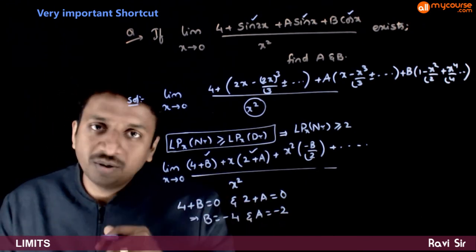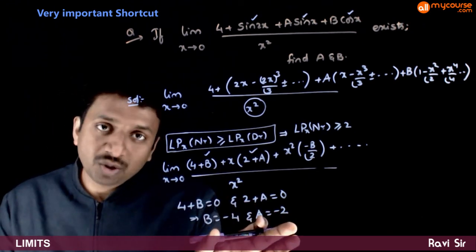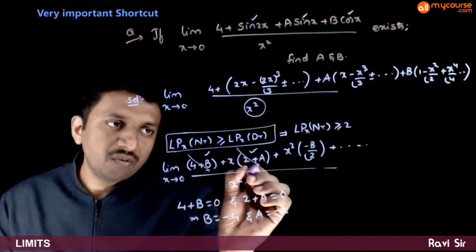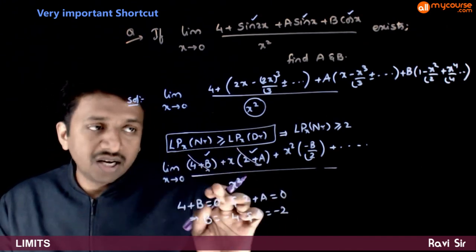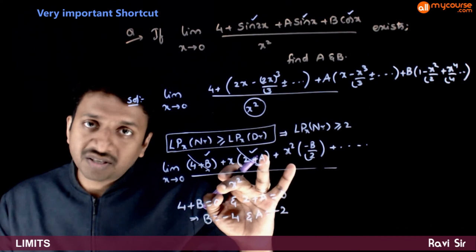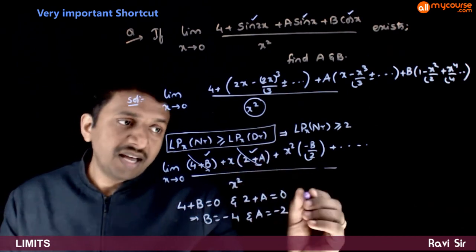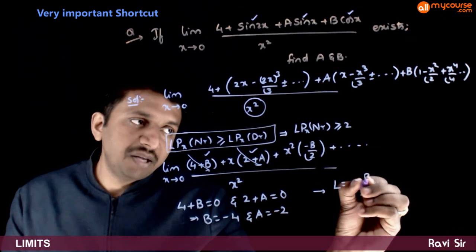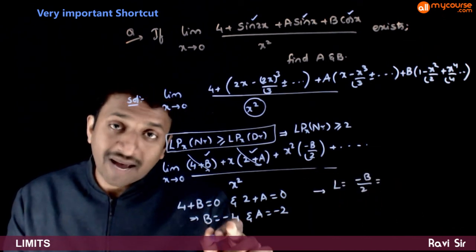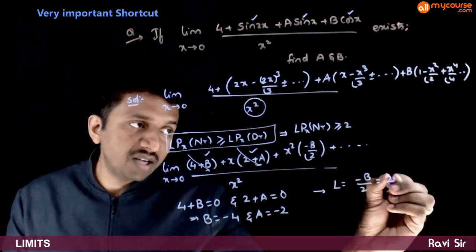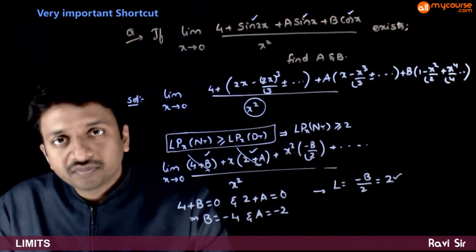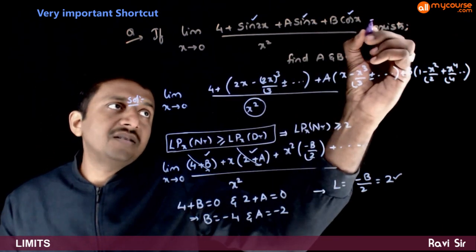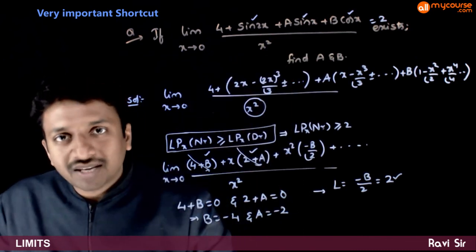With a = −2 and b = −4, the constant and x terms become zero. Now the least power in numerator and denominator are both x², so the limit equals the coefficient of x² in the numerator, which is −b/2 = −(−4)/2 = 2. Hence the value of the limit is 2.